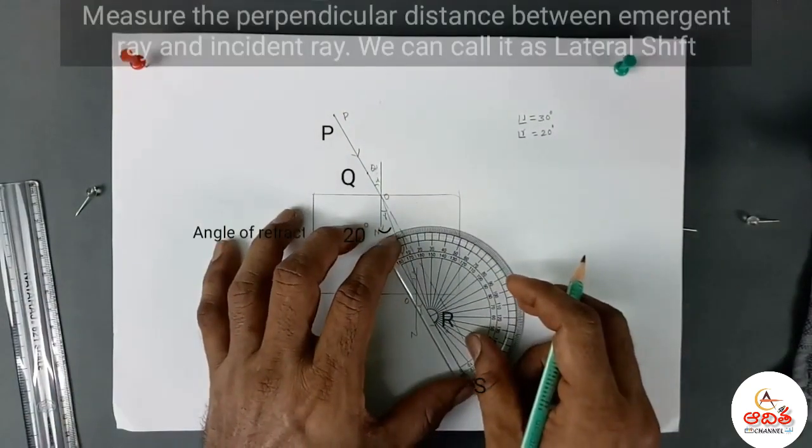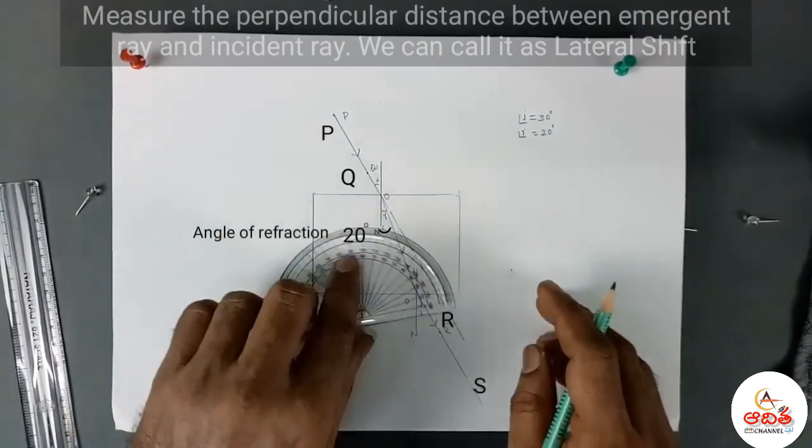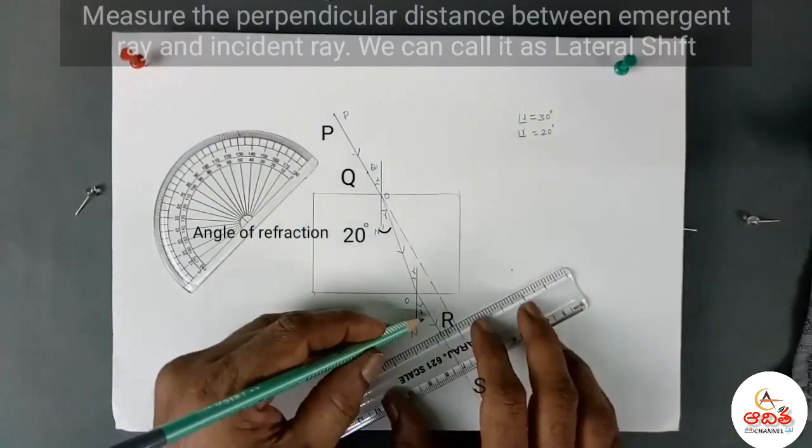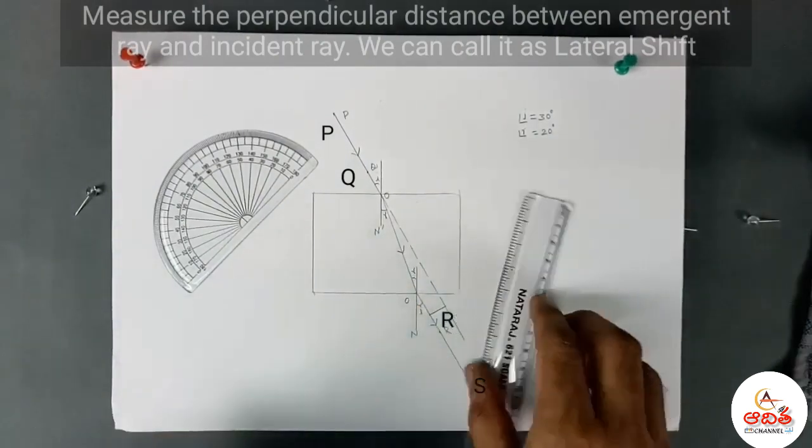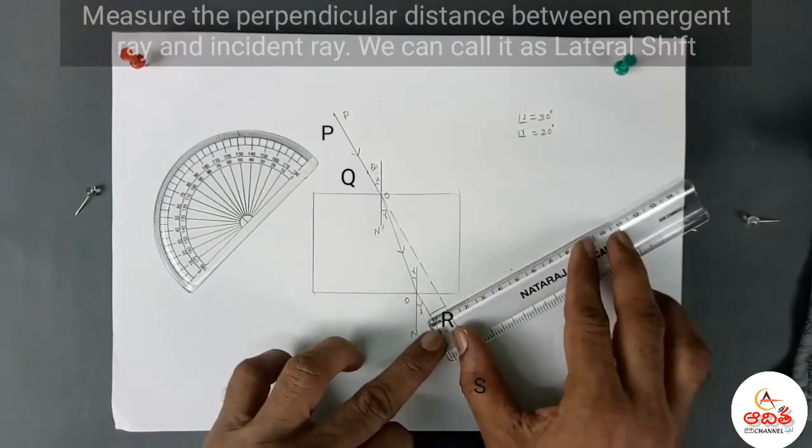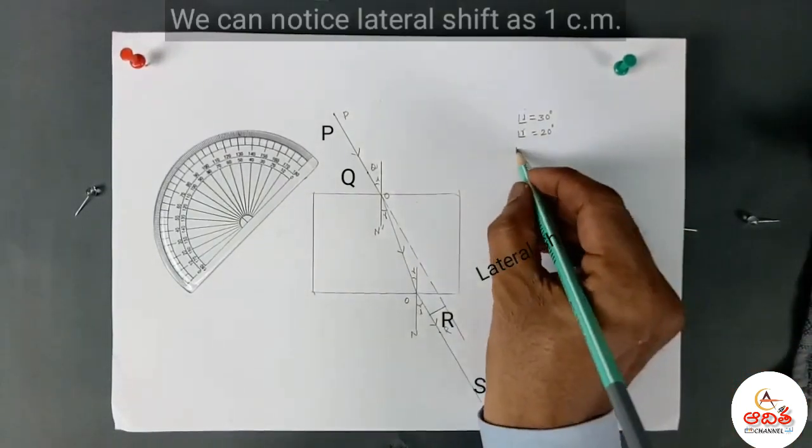Measure the perpendicular distance between the emergent ray and incident ray. We call this lateral shift. We can notice the lateral shift as 1 cm.